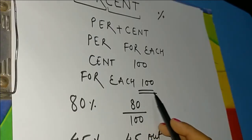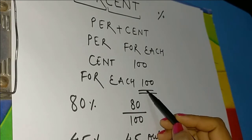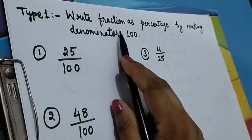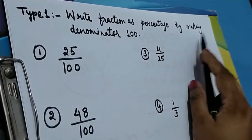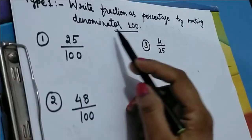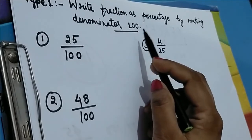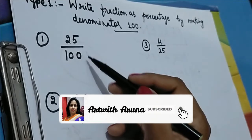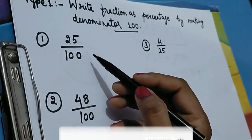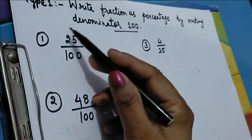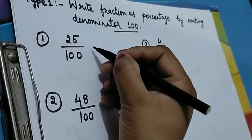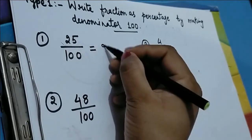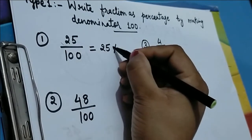When the total number is absent, by default we take 100 as the total number. In the first type of question, we convert a fraction into percentage by making the denominator 100. If the fraction already has denominator 100, it is very simple — we just write the numerator with the percentage sign.